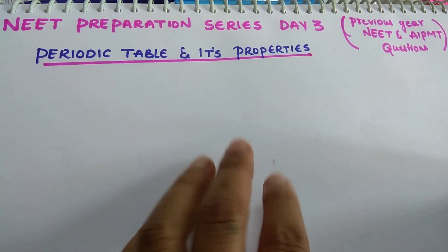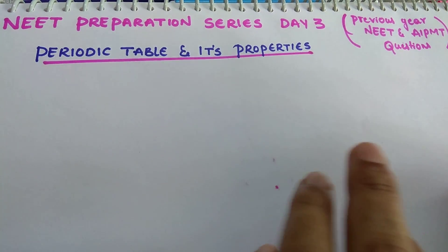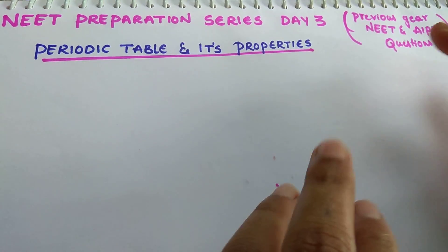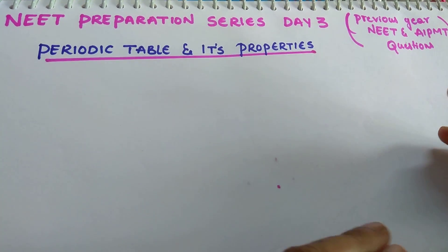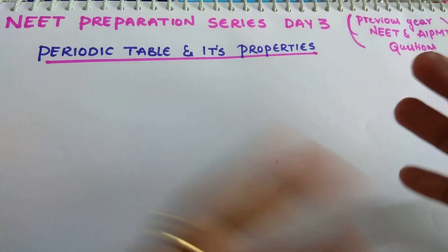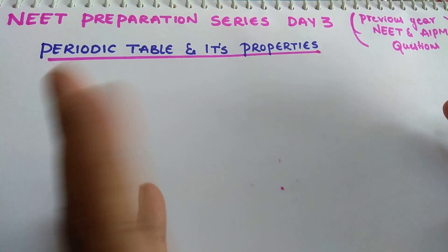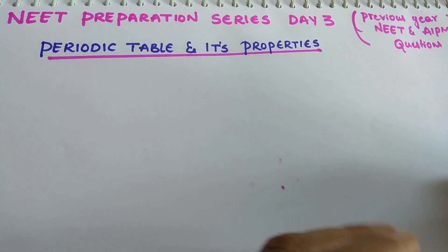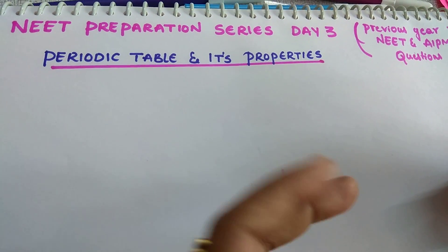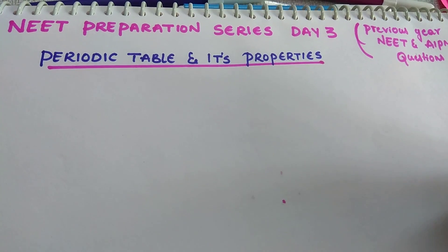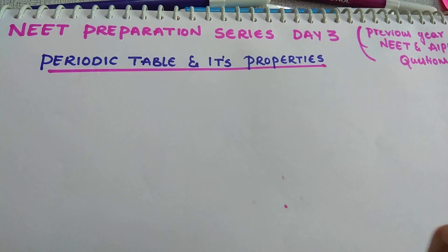Whatever time you have, when you are free, just make important points, notes, or otherwise just do the revision. Go through trends - how atomic radius varies left to right in the periodic table or top to bottom, what are the exceptions, how ionization energy varies, electronegativity, electron affinity - go through these things. It really helps you.